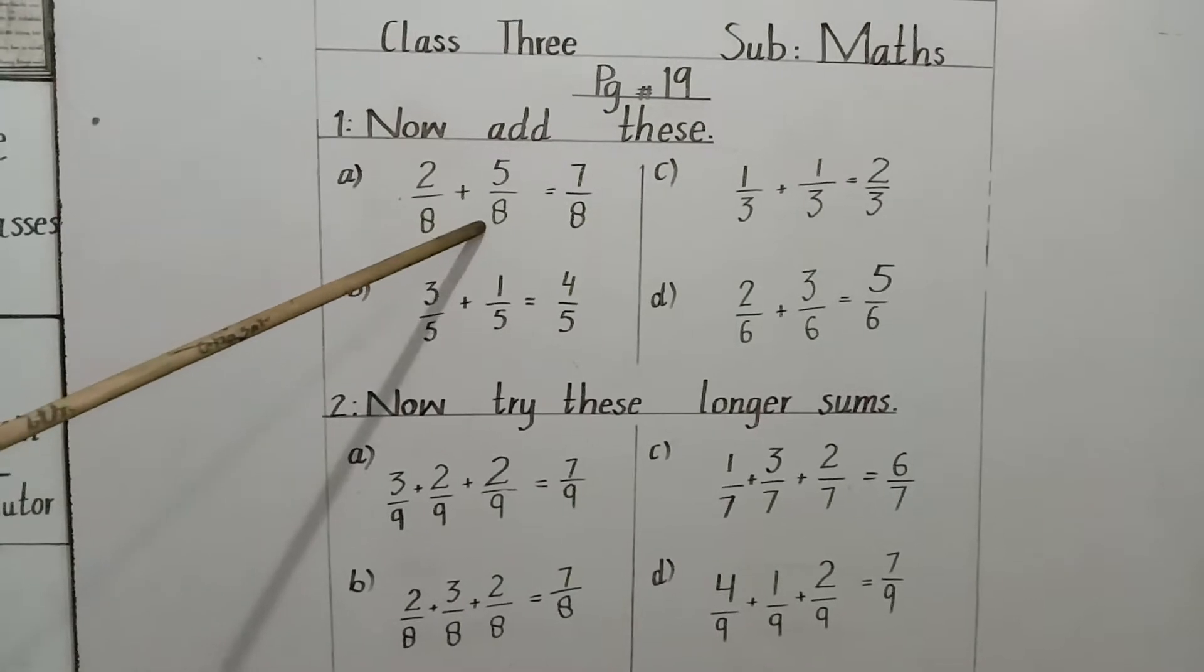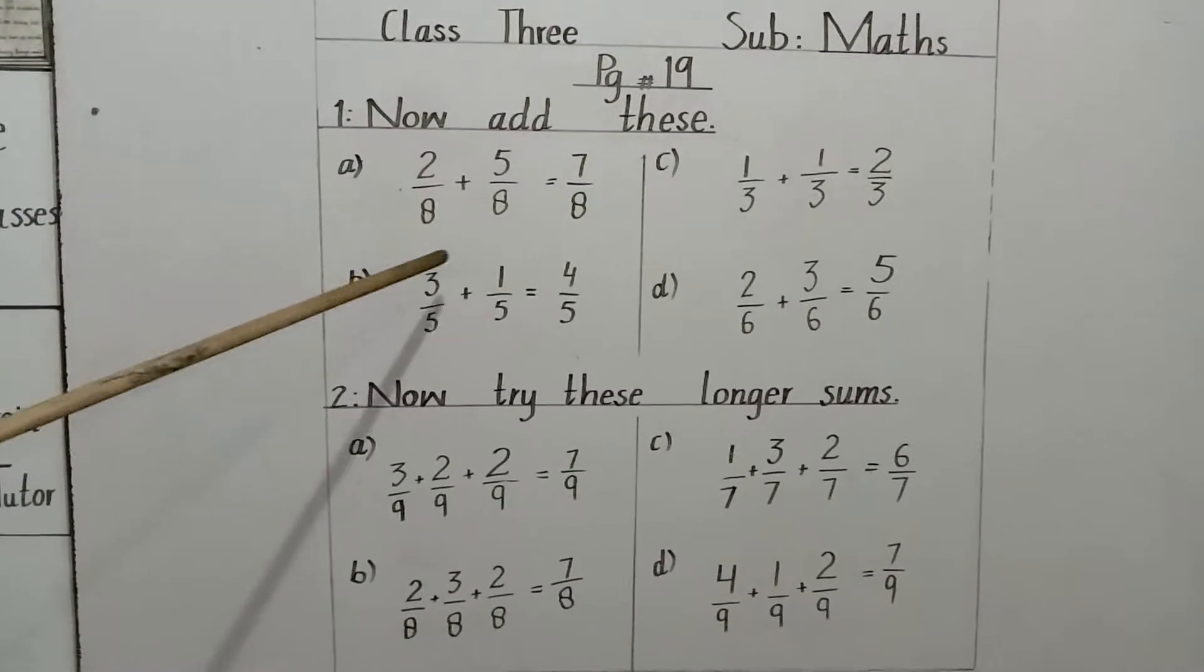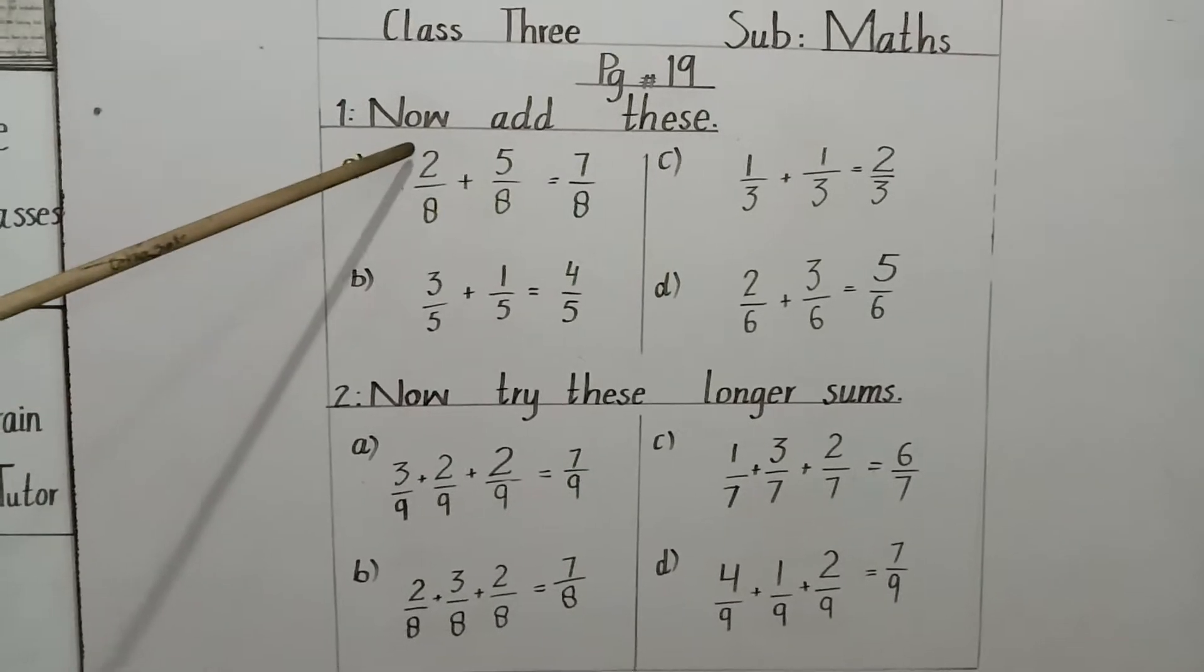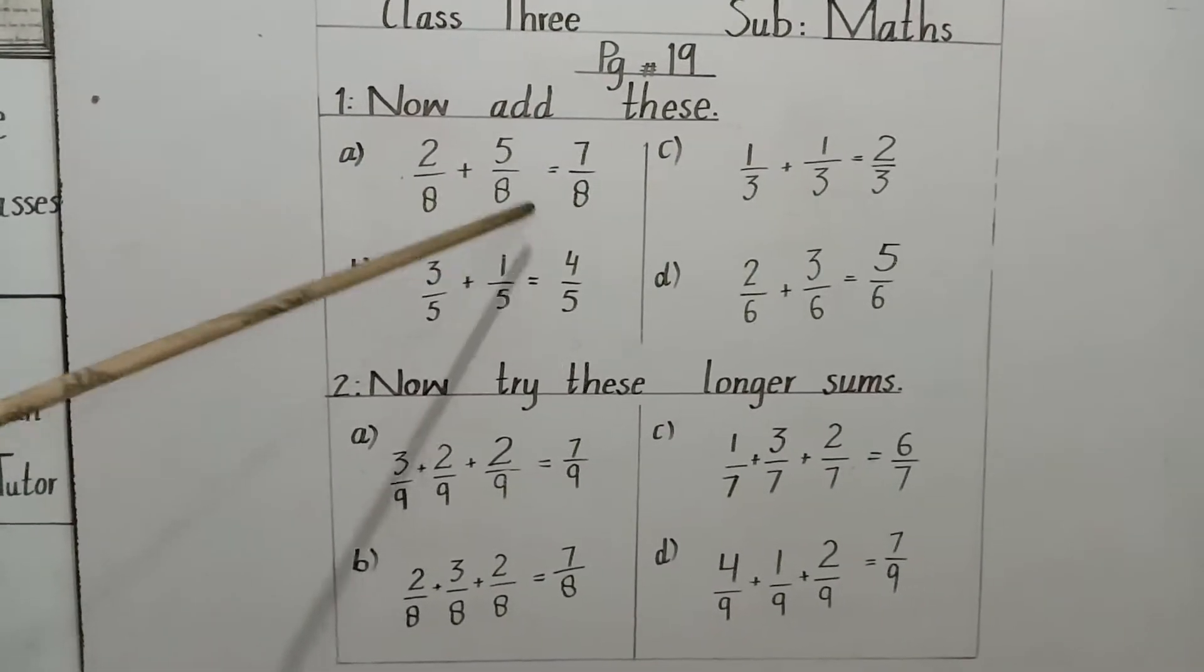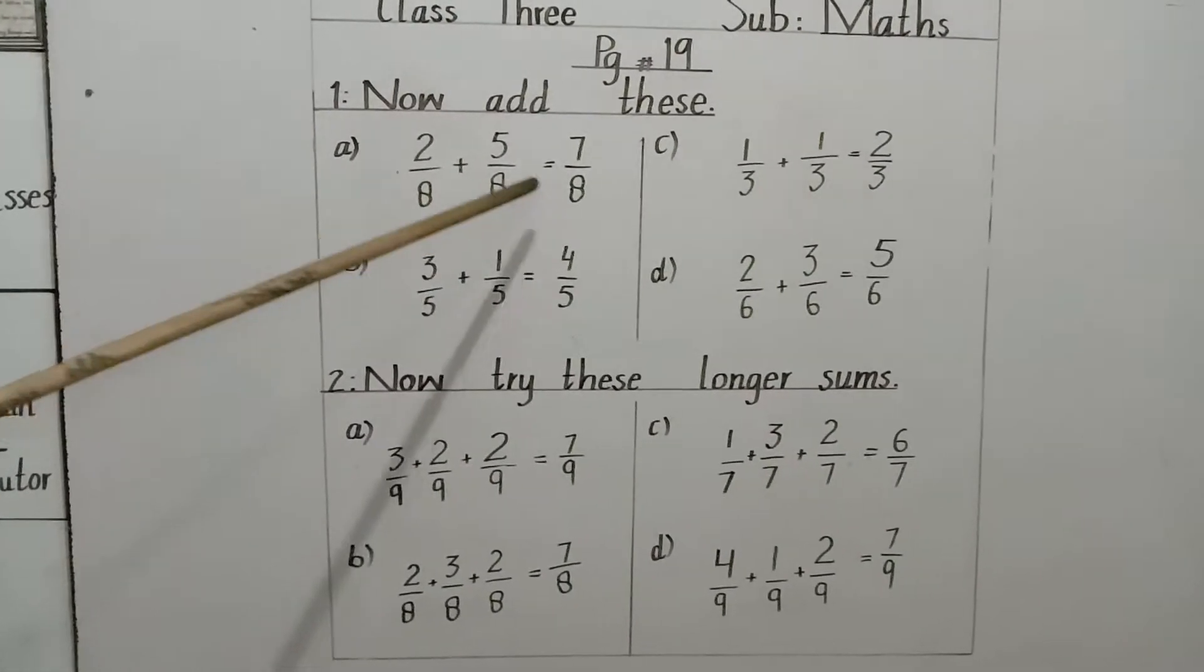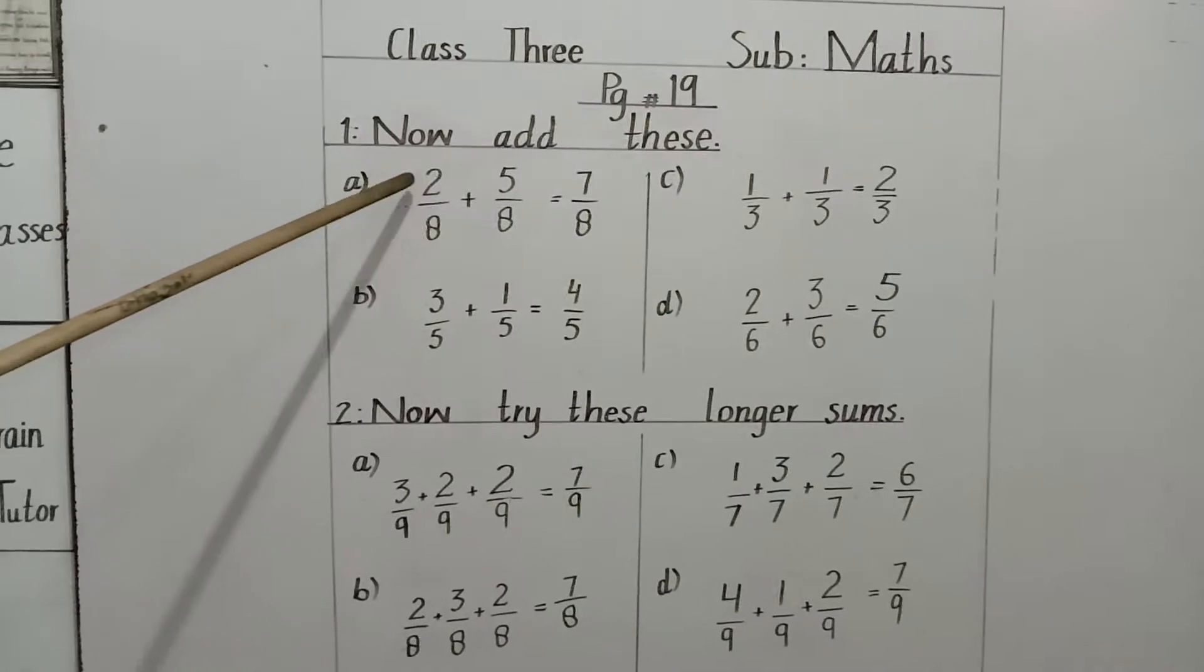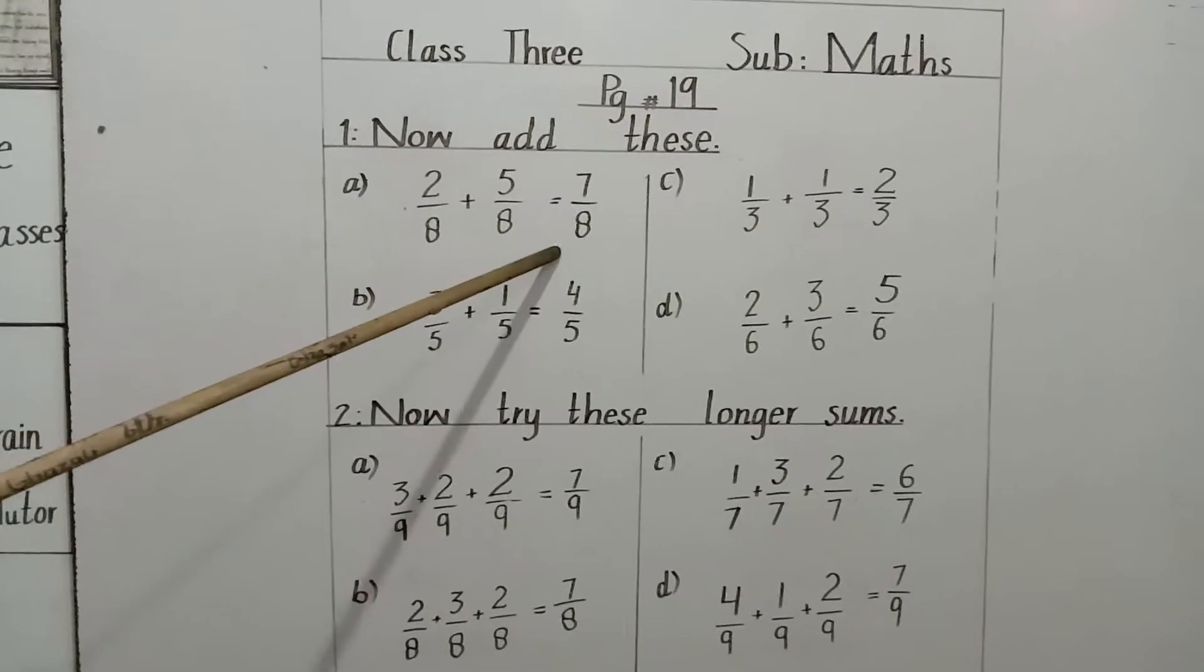These denominators are same and numerators are different. In these cases, we will add only numerators. The denominator will stay the same here. Like 8, these both are 8. So 8 comes here and we will add numerators 2 and 5. These are 7. So the answer is 7 by 8.